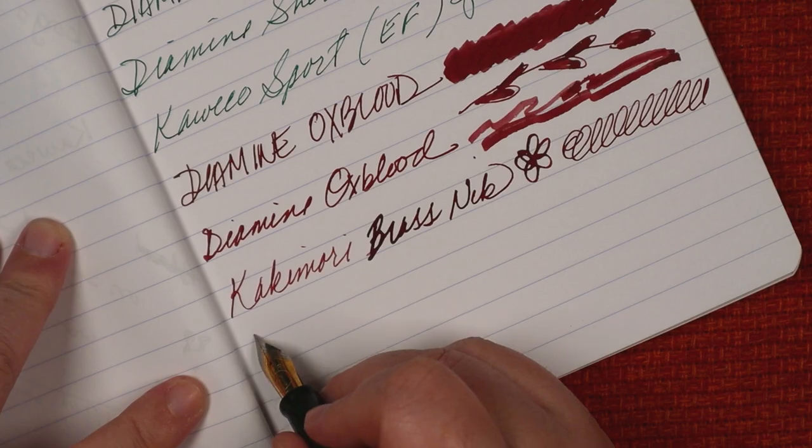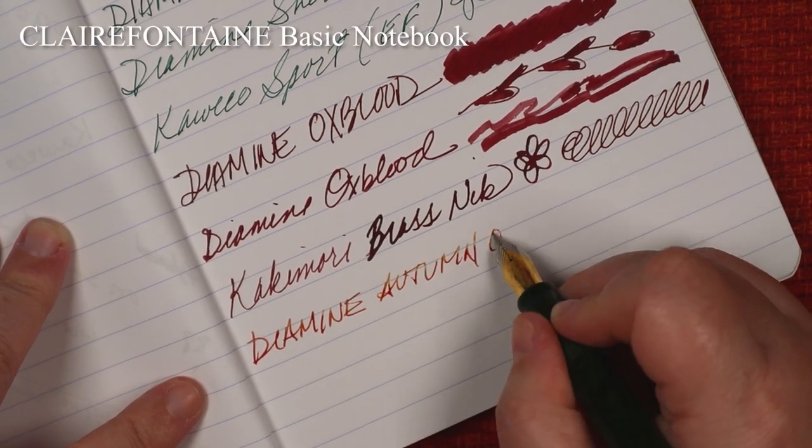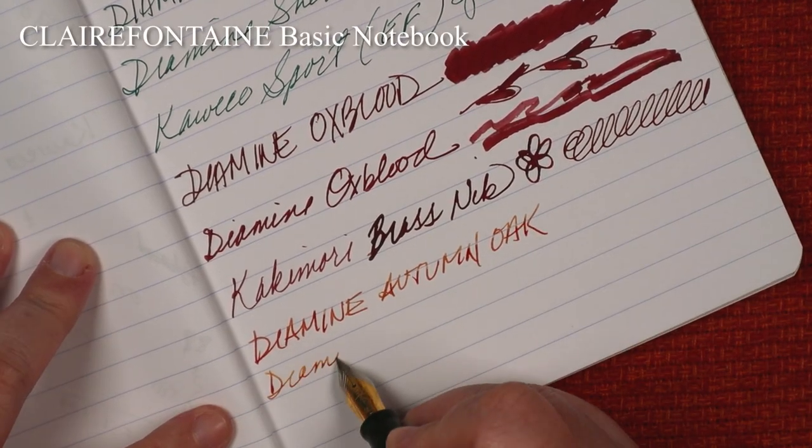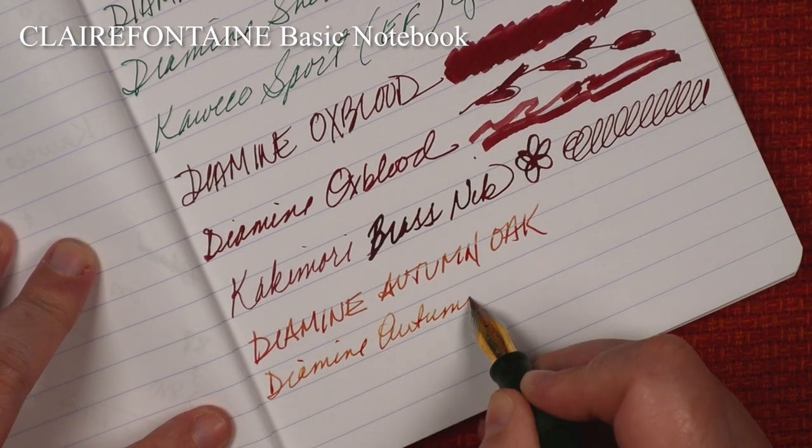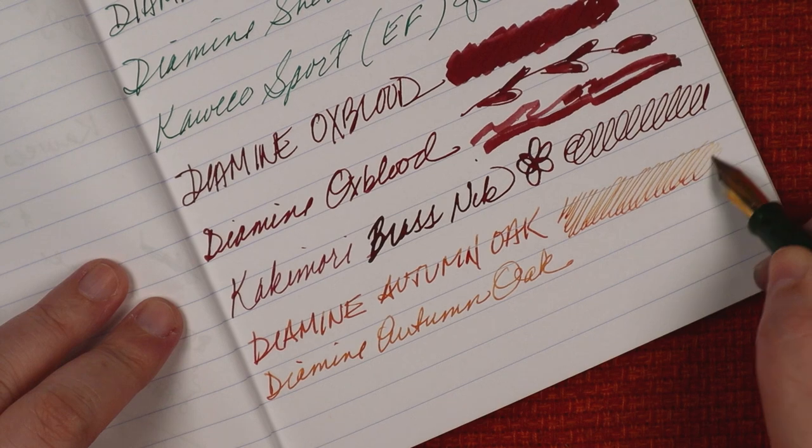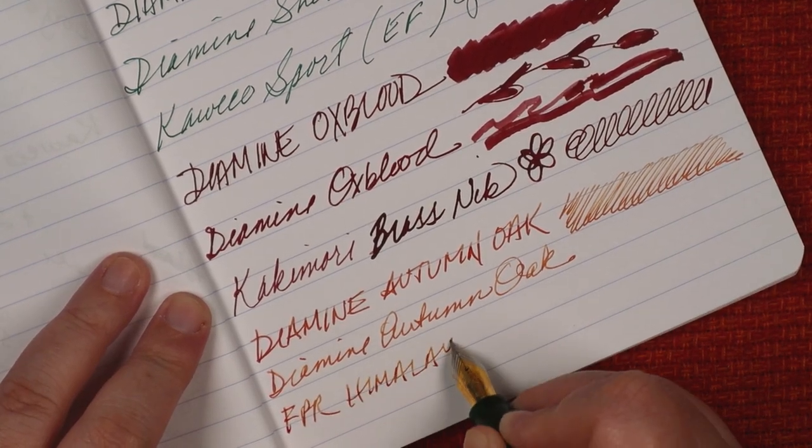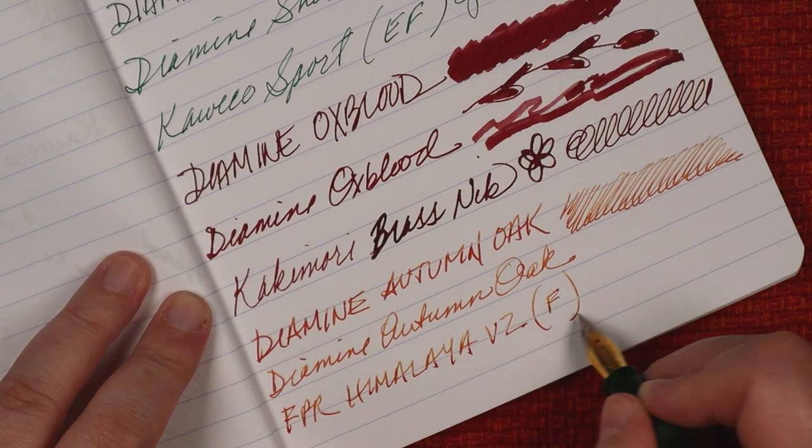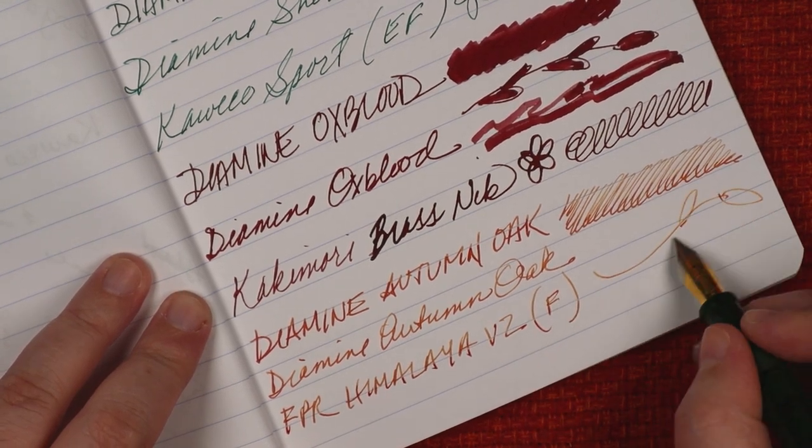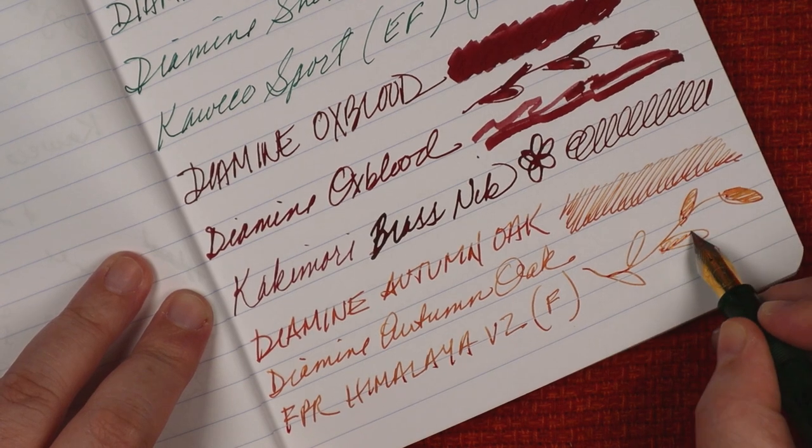So those are my thoughts on the pen. Let's move on to the ink. This Autumn Oak ink from Diamine is a sort of orangey brown. At first, it seems like a very normal, maybe even boring, color. Personally, I think it's a lovely shade that straddles an autumnal brown and a brighter, almost citrusy orange.